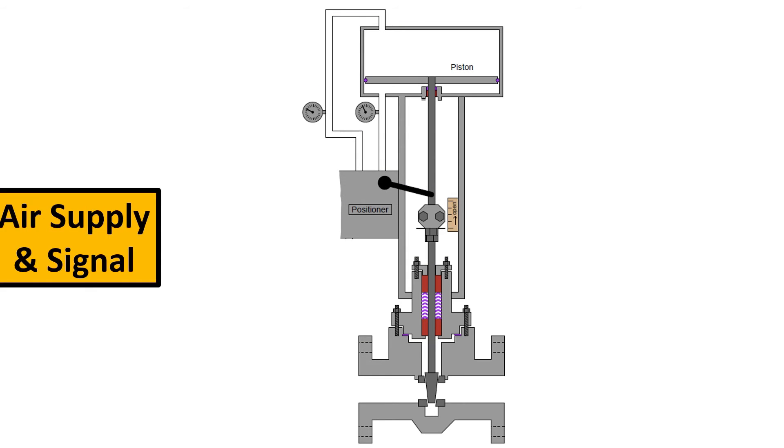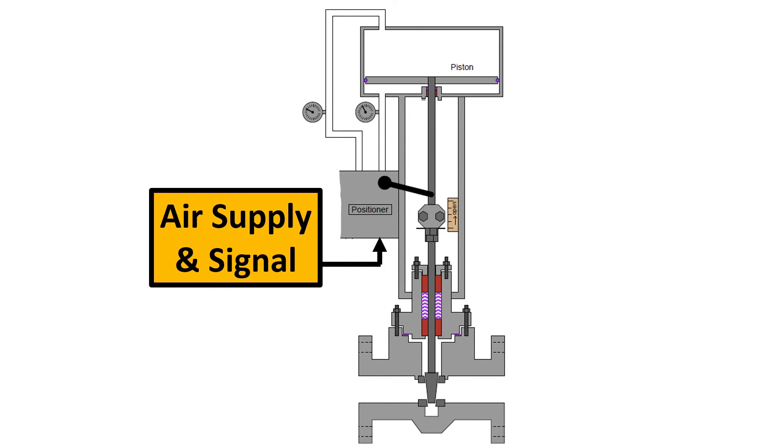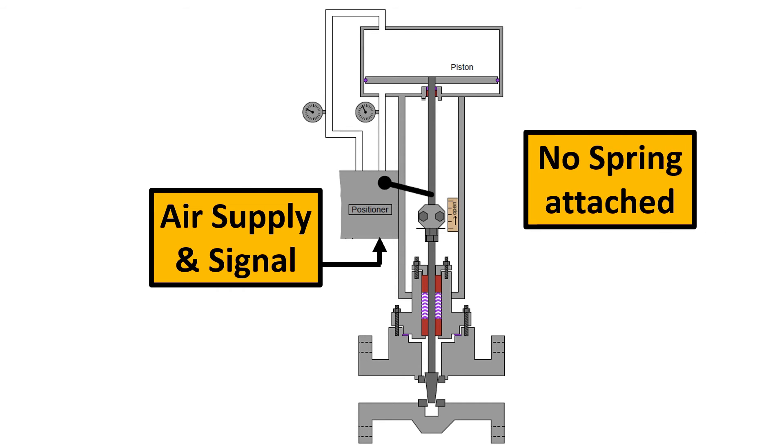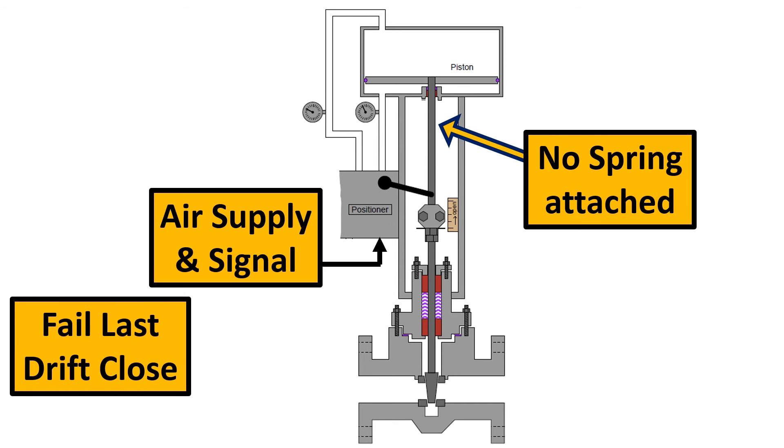So here if you see the air supply is going to come from here and the air supply is going to rotate the piston or basically move the piston but there are no springs attached to it. Do you see that? So what is going to happen here is if you want fail last drift close, drift meaning eventually it will lead to close. How? Because of the fluid flow.